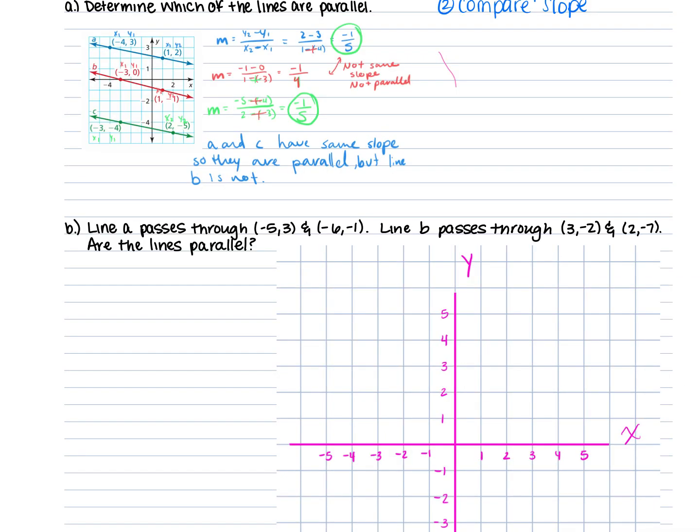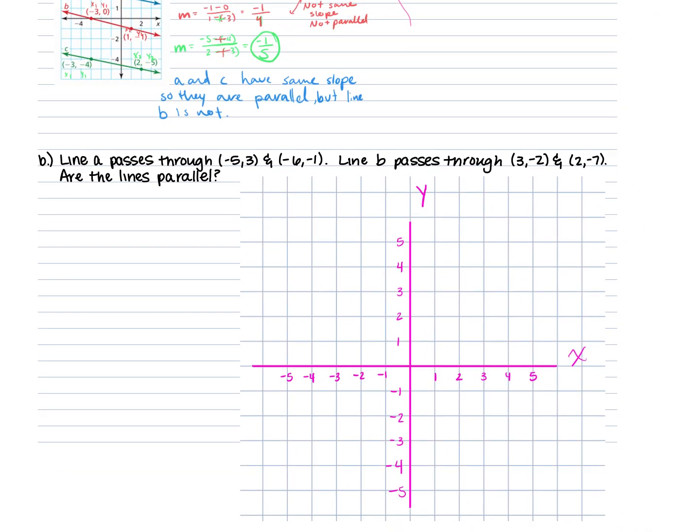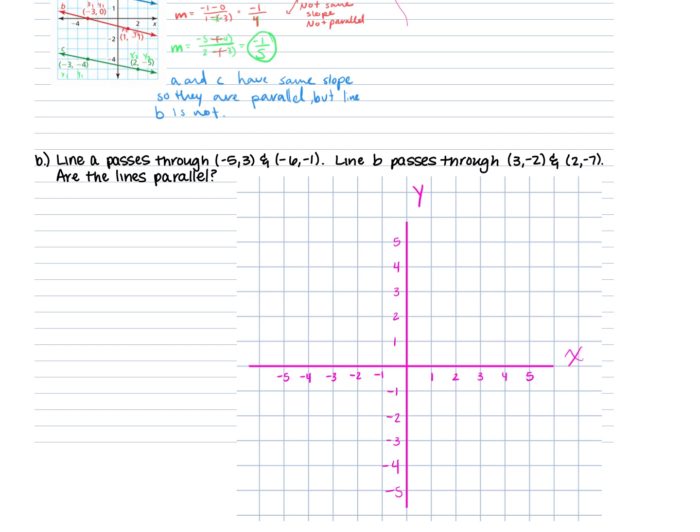For the next part, B, we're doing the same thing. We have to find a line that passes through two given points and then another line, and figure out if they are parallel. I'm going to first draw line A with these two points.